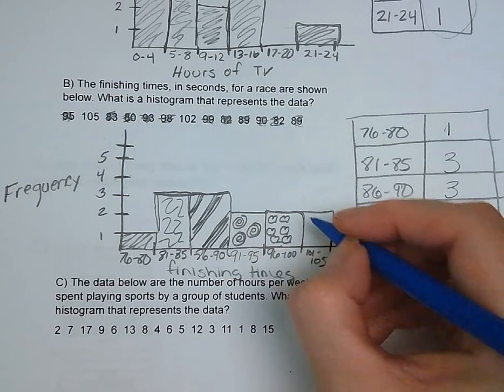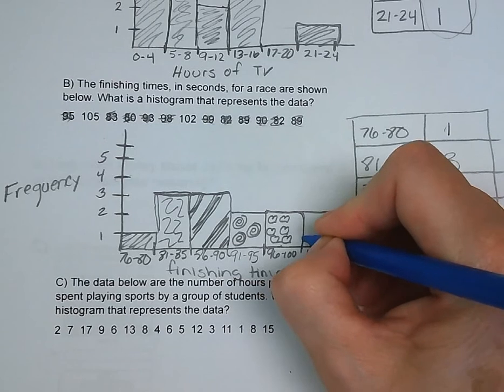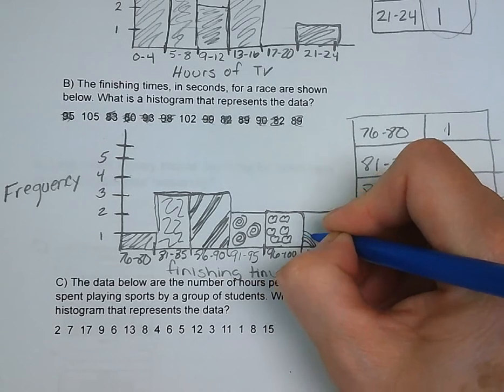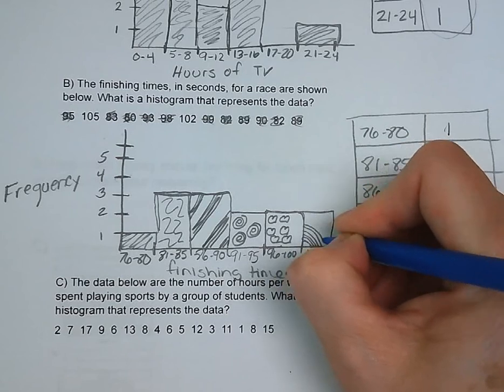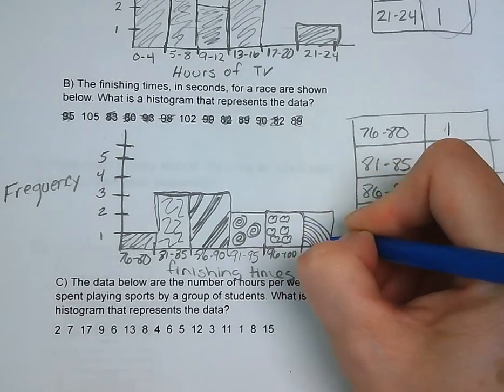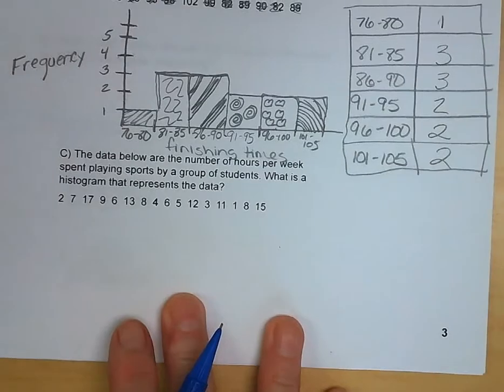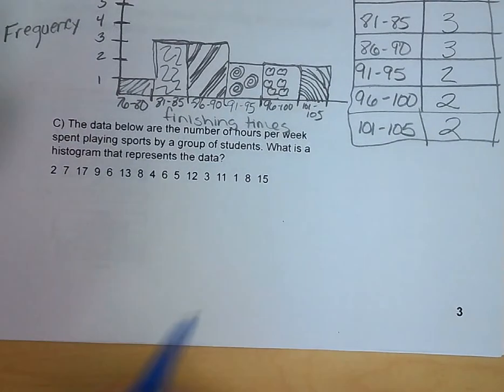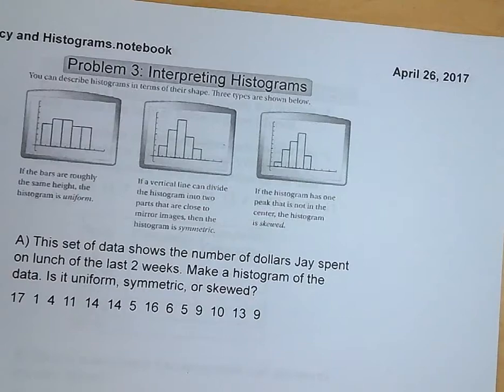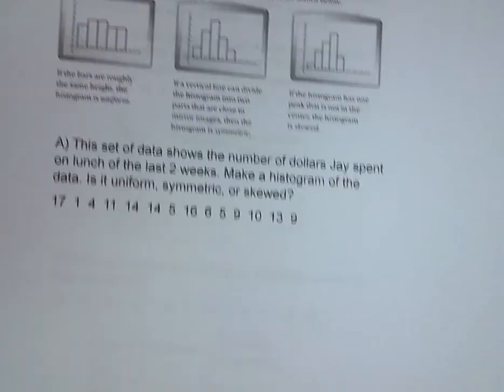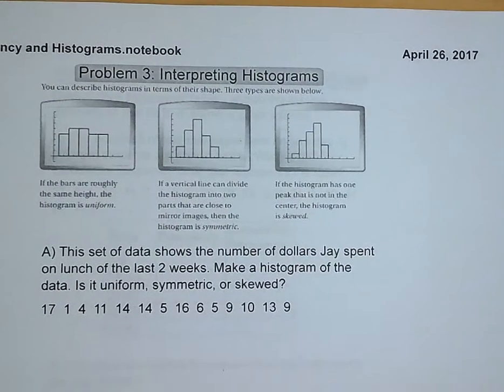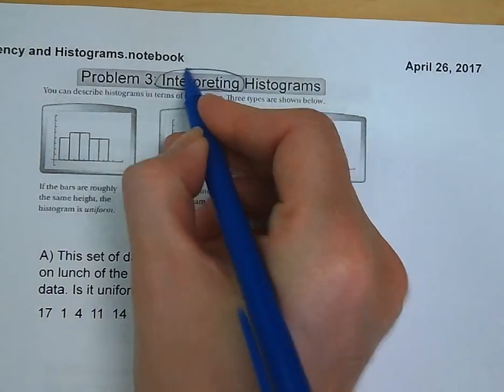If you chose a different interval, bigger or smaller, if it was a bigger interval, you'd have less bars that you're dealing with. If you picked a smaller interval, you've got more bars to deal with. So yours may not look exactly like ours. Why don't you guys try C on your own? Problem three, interpreting histograms.